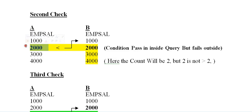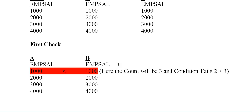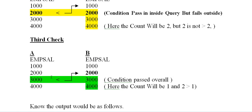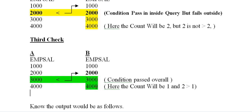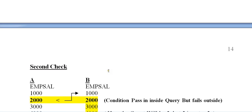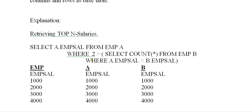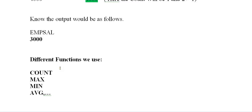For 2000: how many records in B are greater than 2000? Two records — but 2 is not greater than 2, so the condition fails. Third check: 3000 — how many records are greater than 3000? Only one record (which is less than 3000 in B). Since 2 is greater than 1, the condition passes. So the output is 3000 as the second max salary.